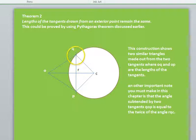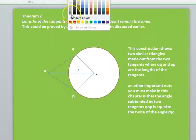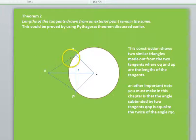Okay, I just converted my diagram into a neat geometrical figure over here. I have the points O, P, Q, R and C. Let me just change my ink color. Yeah, so O, Q, P, R and C. O, Q and O, P are the lengths of my tangents. This construction shows two similar triangles made out from the two tangents where O, Q and O, P are the lengths of the tangents.